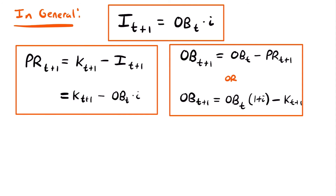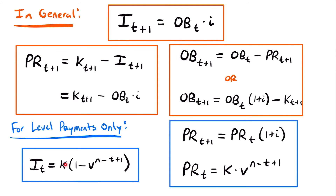There are some extra formulas that result from this process when you have level payments. These formulas are for level payments only — the moment you have non-level payments, these formulas will not work. Capital I sub T equals the payment K times (1 minus the present value factor to the power of N minus T plus 1). The principal at time T equals K times the present value factor to the power of N minus T plus 1. Additionally, the principal at one period after a known principal can be found by multiplying that principal by (1 plus I).